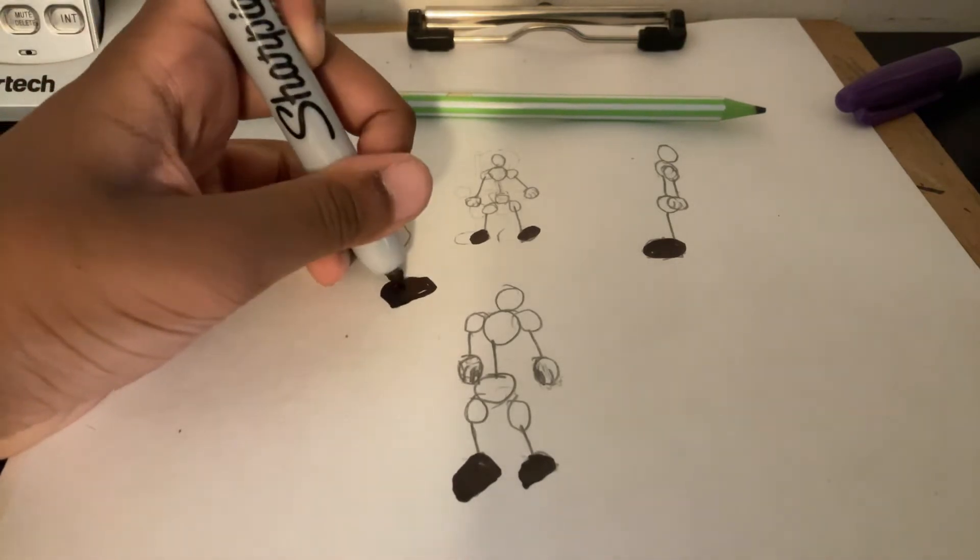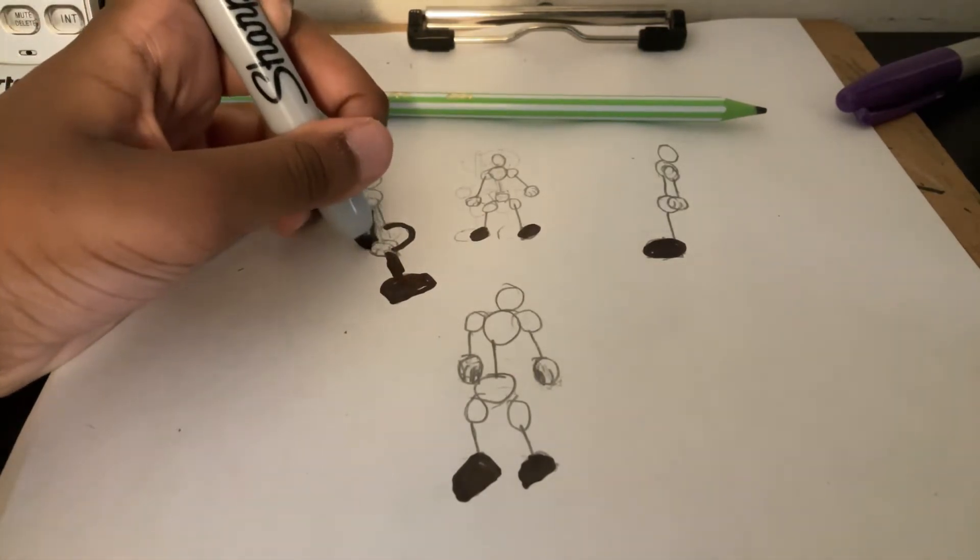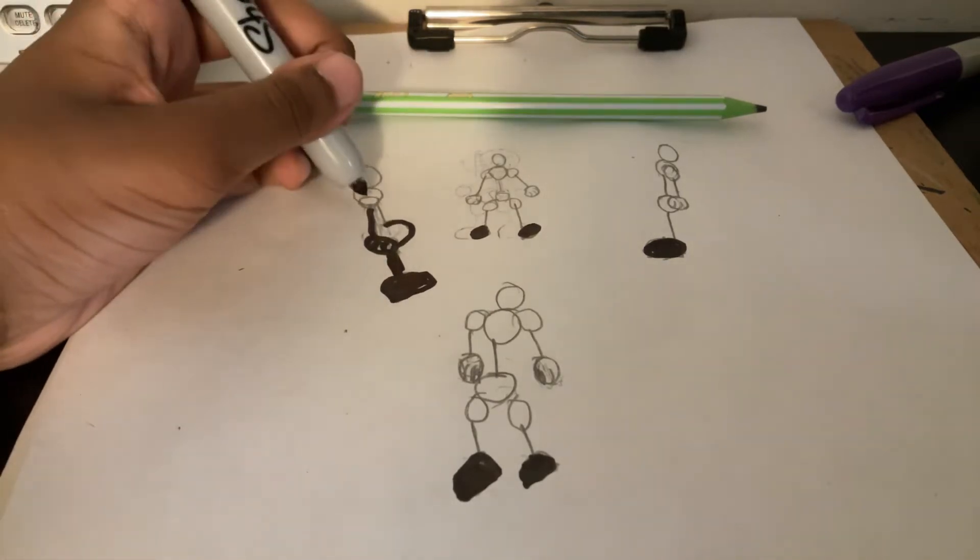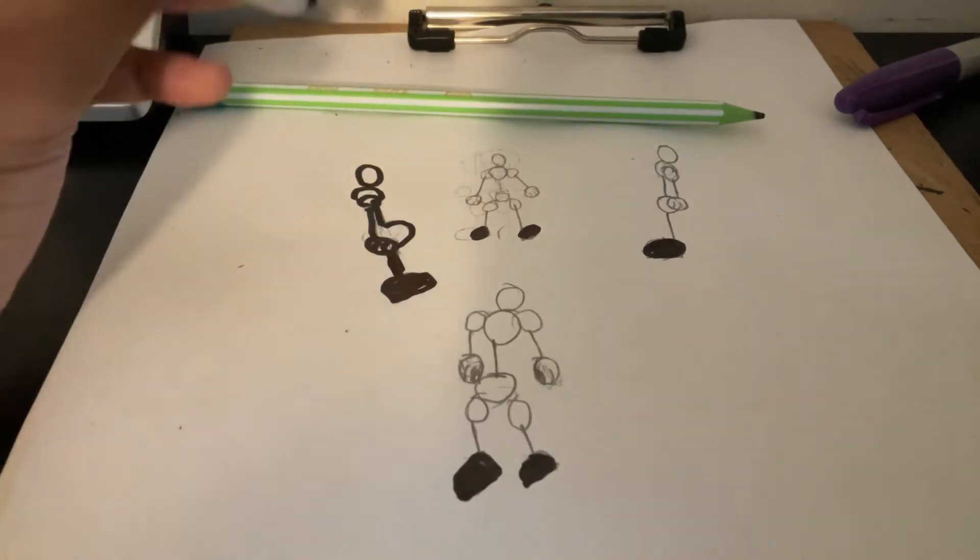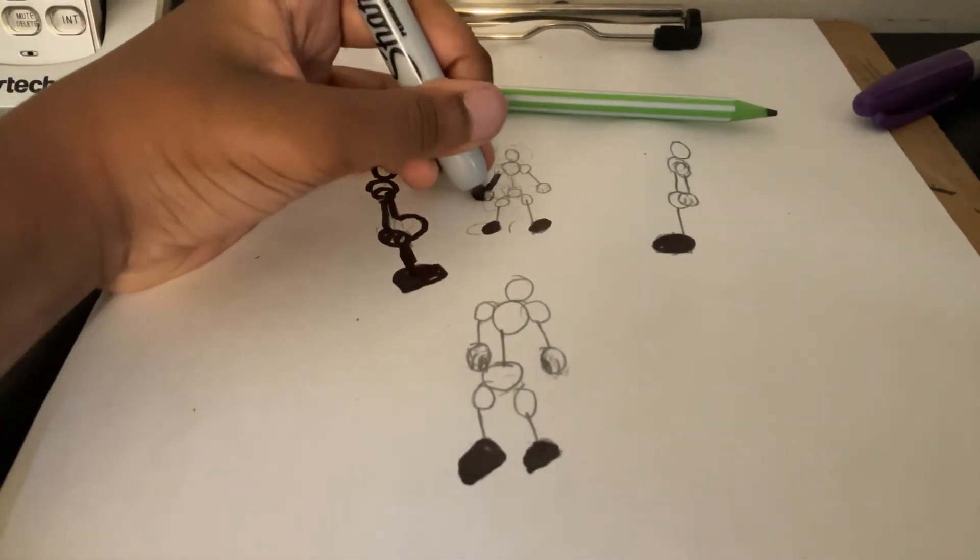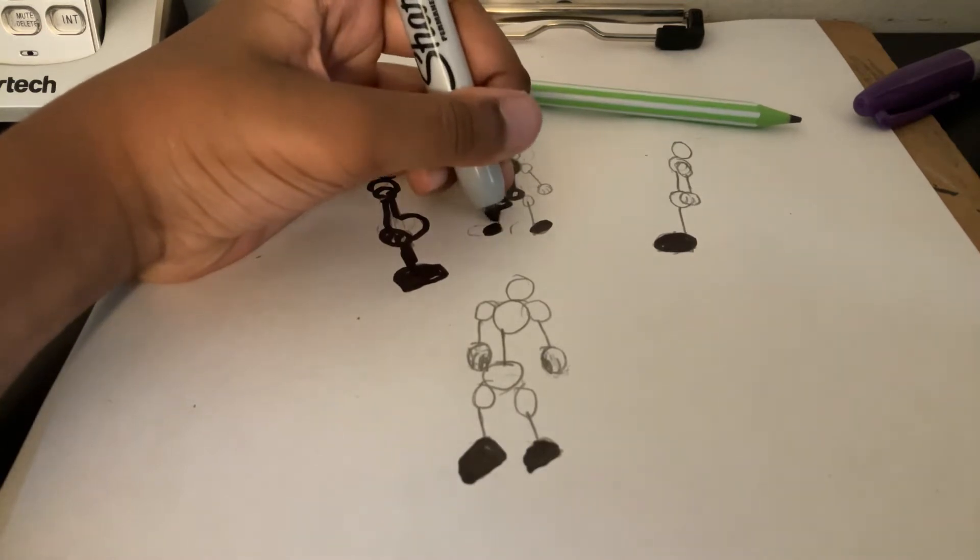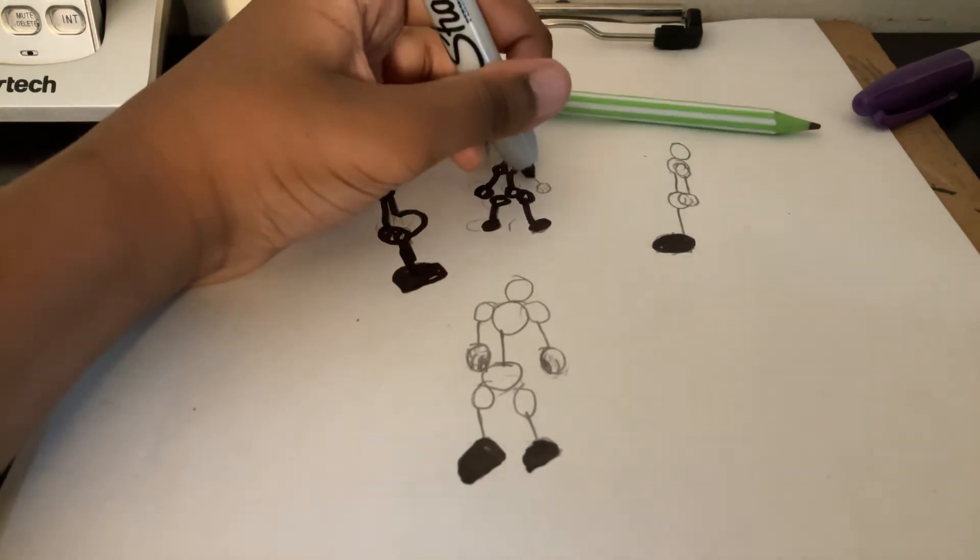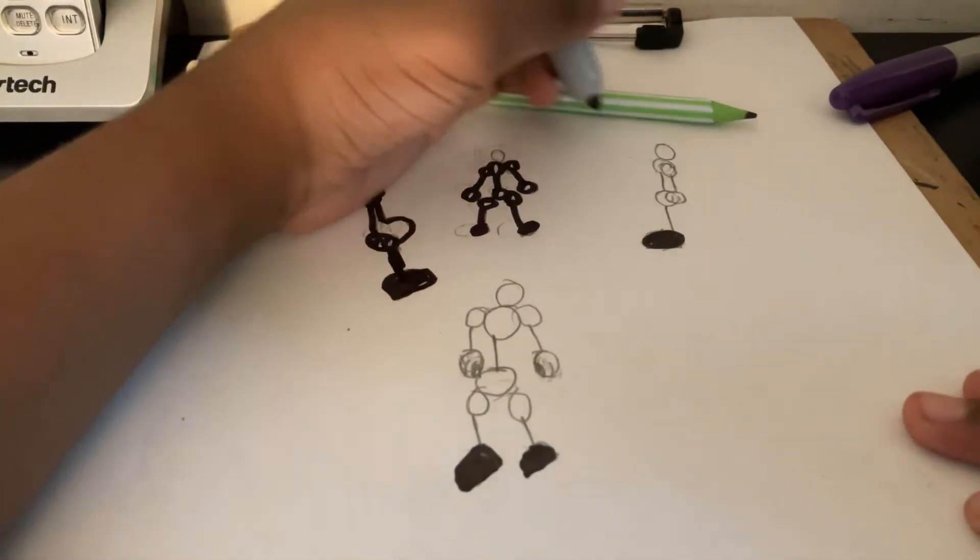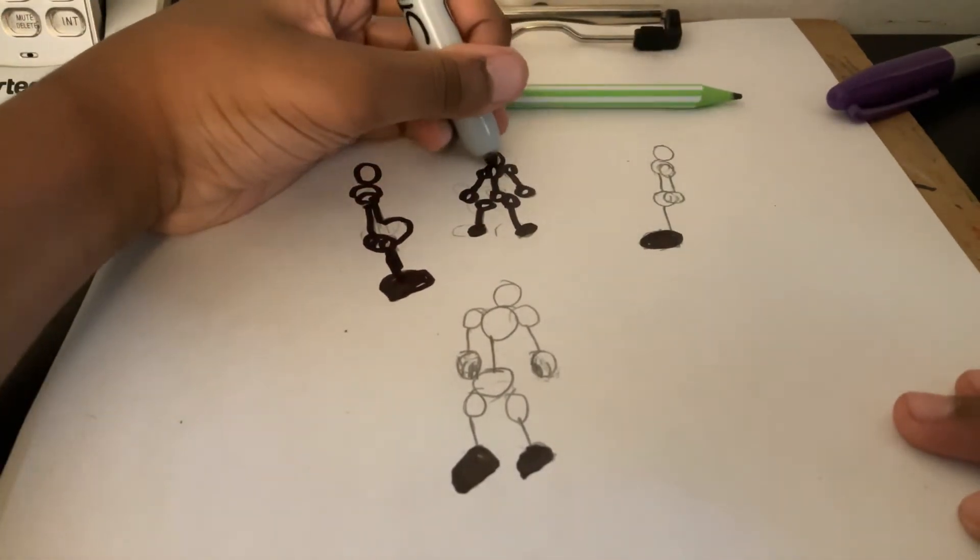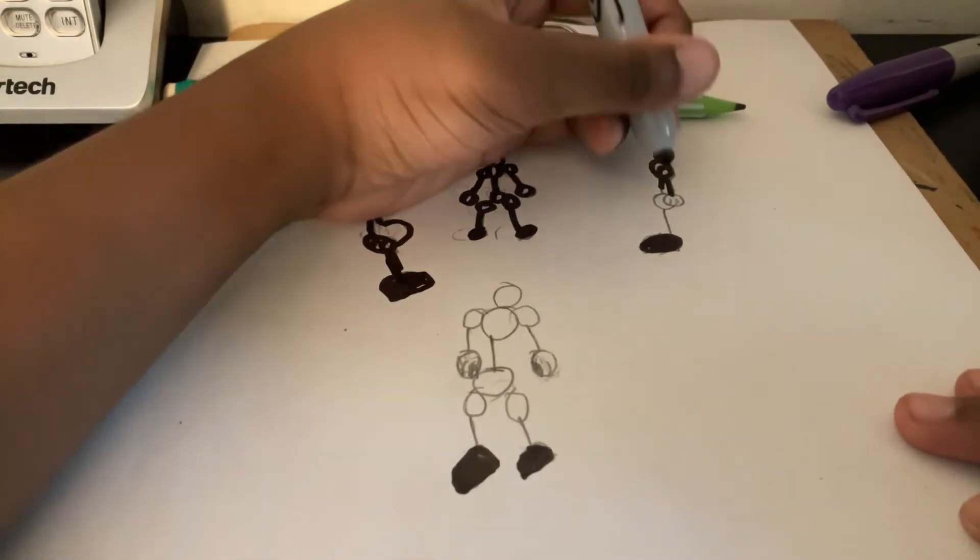So now we want to trace the things with the sharpie. I should stop looking through there. You should do this with a more compatible marker, like the tiny red ones.